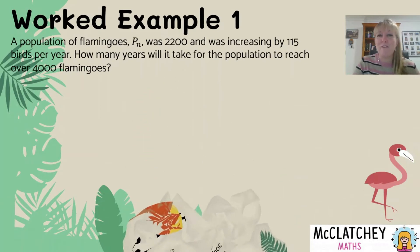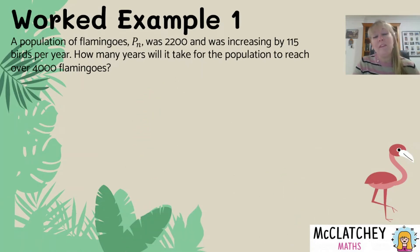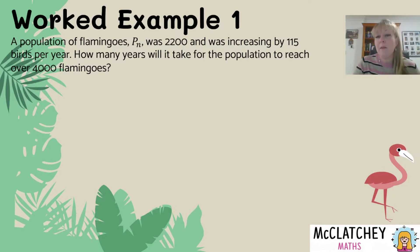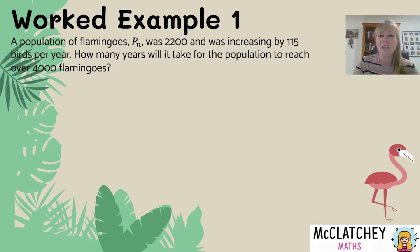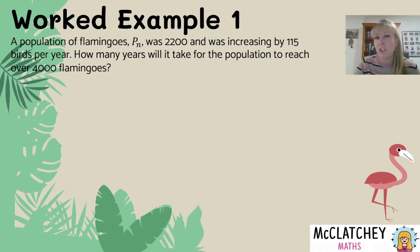Let's get started with our first worked example. We have a population of flamingos, PN, and it was 2,200 and it's increasing by 115 birds per year. How many years will it take for the population to reach over 4,000 flamingos? It's very important to unpack the question properly. You'll notice you're being asked to look at a population of flamingos, PN, so you need to use that same notation that's in the question when providing your answer.